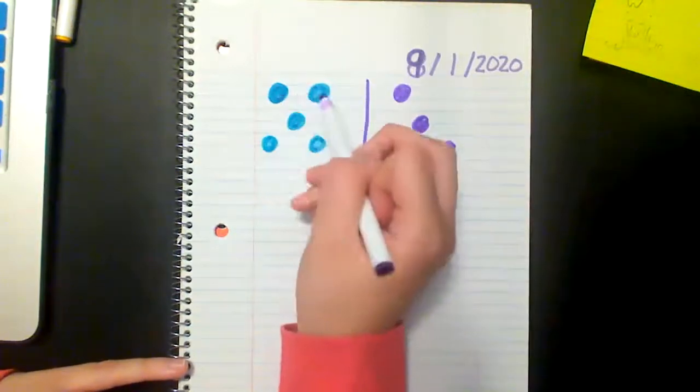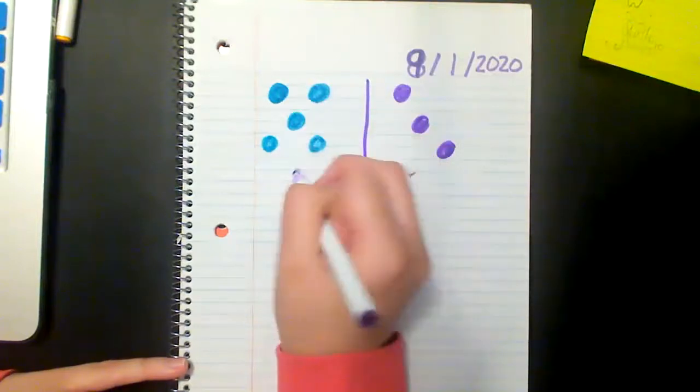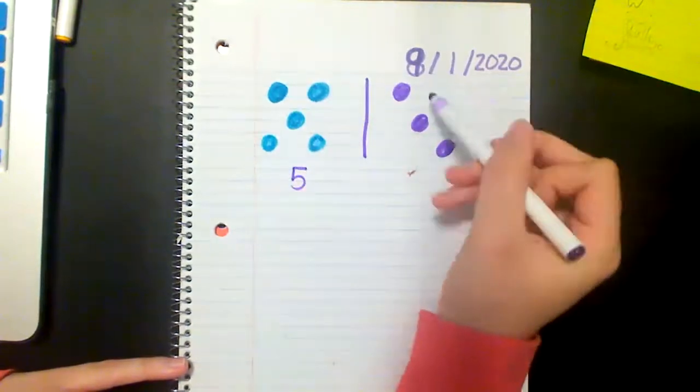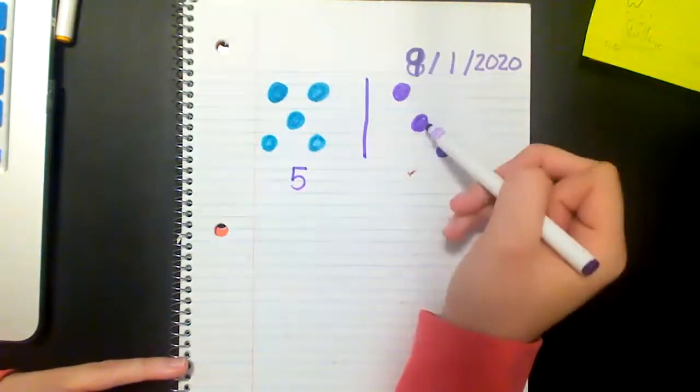So for blue I have one, two, three, four, five and then I'm going to count how many purple dots I have. One, two, three.